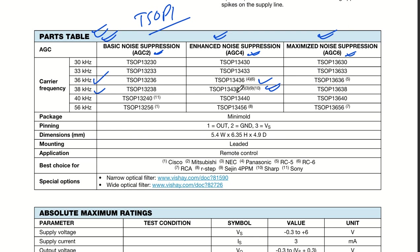TSOP 13436 or TSOP 13438 is the best device I can recommend from this table for any application. The bracketed numbers in the table indicate best choices for specific protocols: Cisco devices, Mitsubishi, NEC code, Panasonic, RC5, RC6, RCA code, and R-step codes are all applicable.